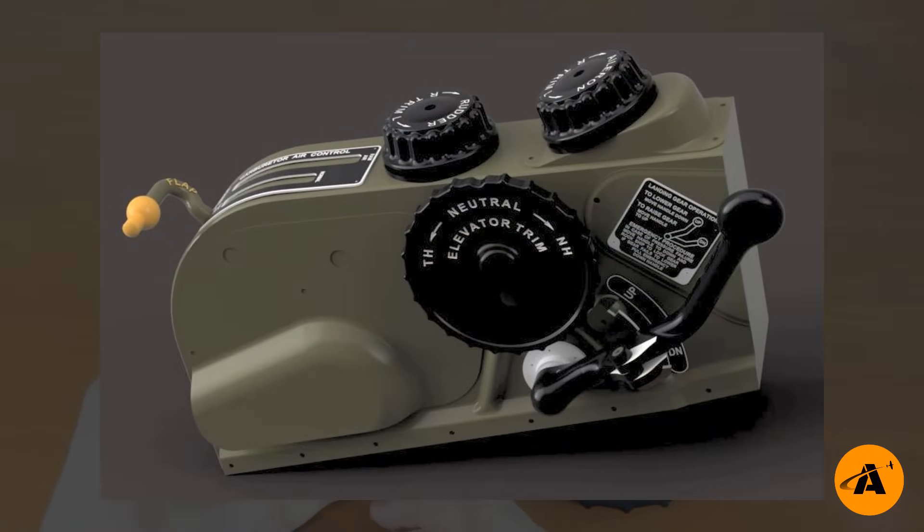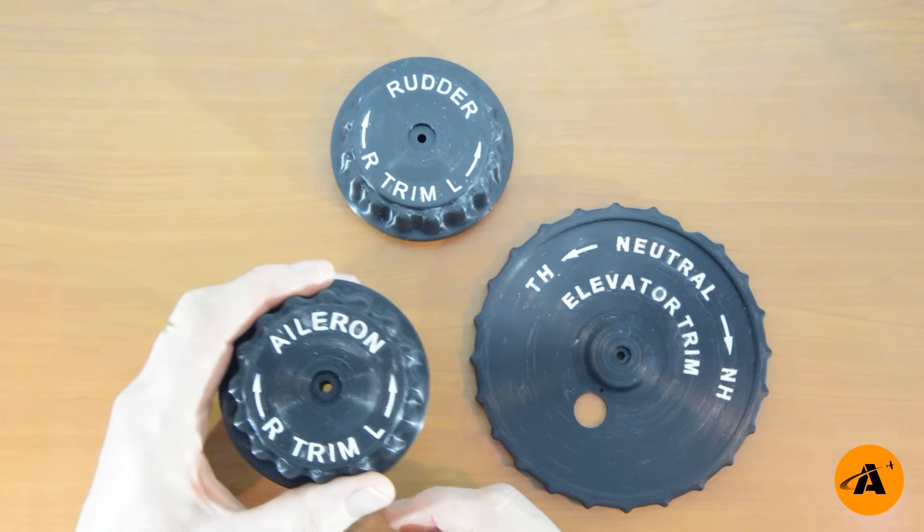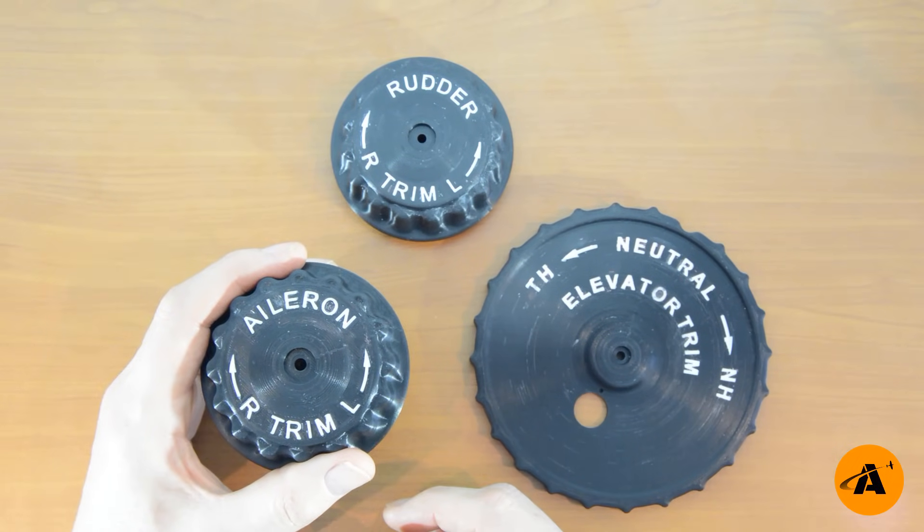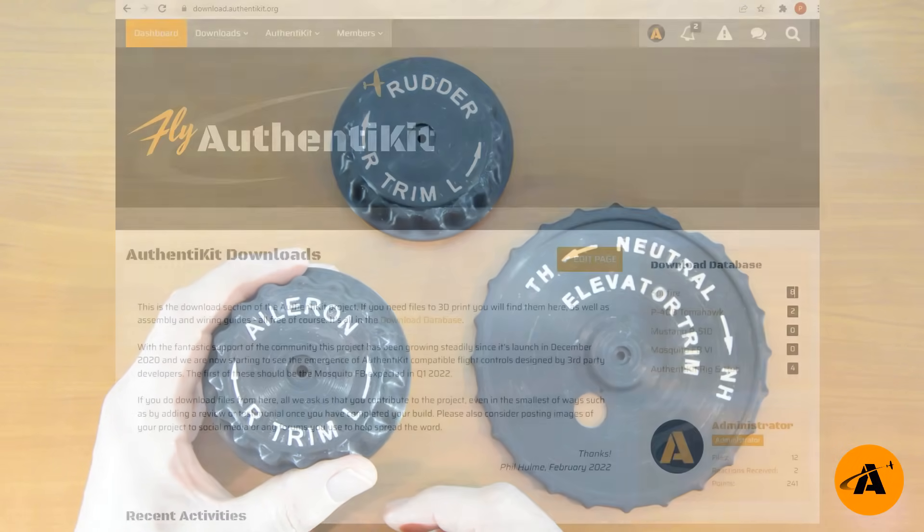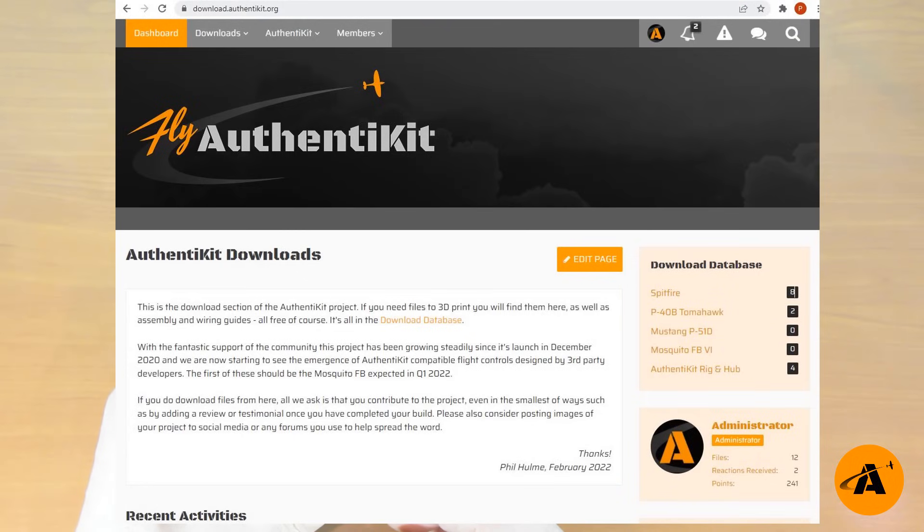And this is how the trim wheels will be mounted to this pedestal that comprises trim wheels and a landing gear lever as well as flaps lever. I can't wait to finish this, just don my VR headset and wrap a P51 Mustang around me with the authentic feeling of replica flight controls to hand. And when I do, you're entirely welcome to download all the files to 3D print the pedestal from download.authentikit.org at absolutely no charge. This is a community freeware project.